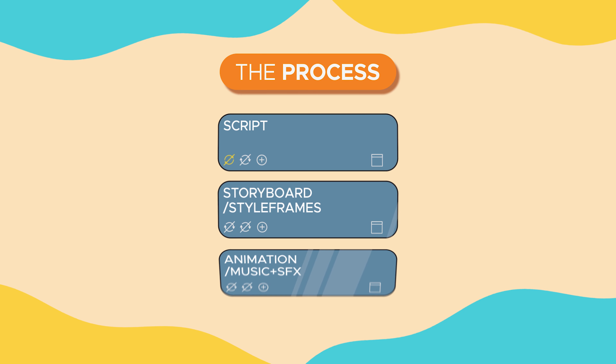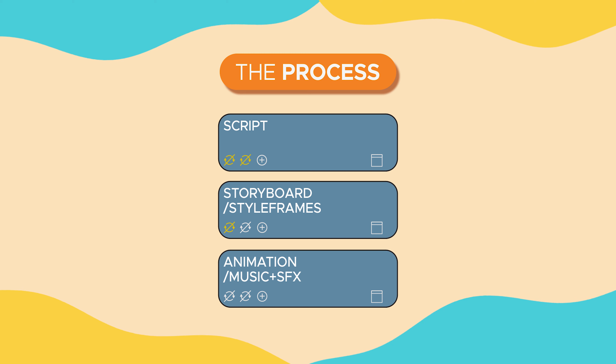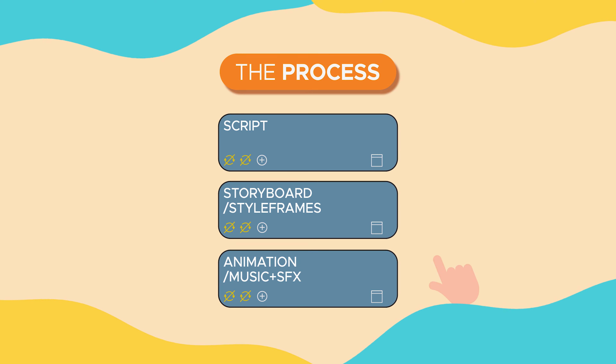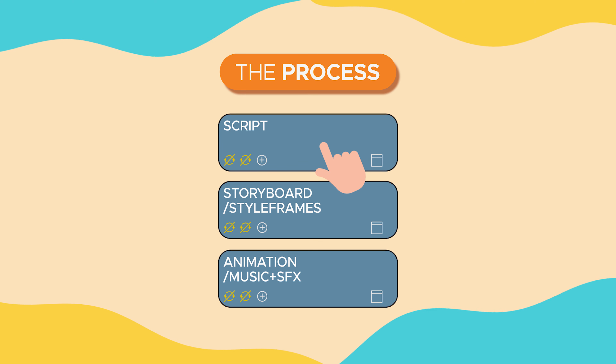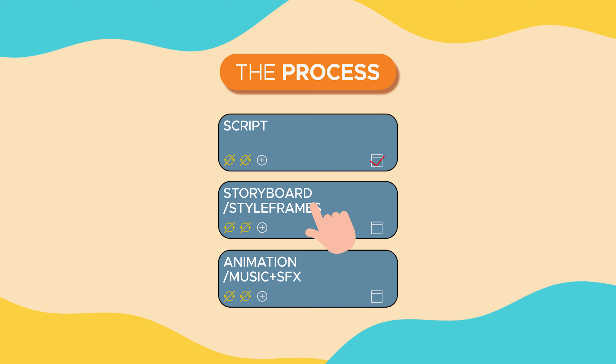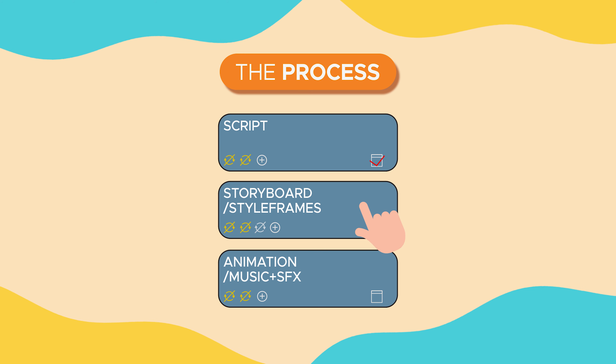This process includes two corrections per stage, and we will only move forward once the previous stage is approved. However, if needed, more corrections could be added with a budget adjustment in order to enhance the video.